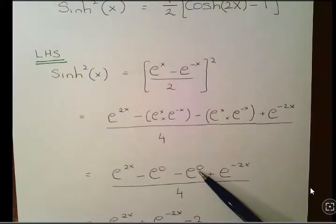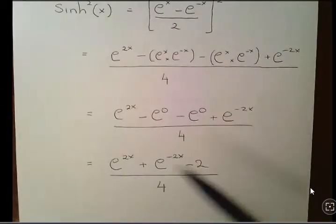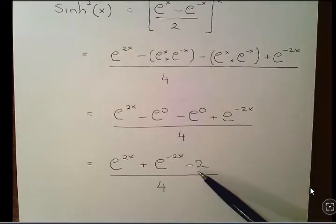E^0 is actually simply just 1. So piecing that together: (e^(2x) + e^(-2x) - 2)/4. Now that's where I'm going to stop.